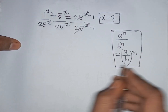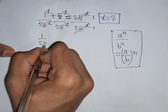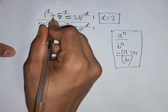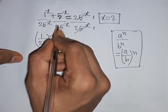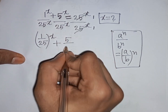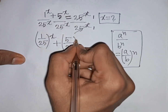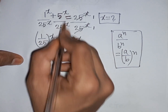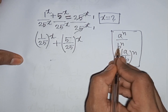According to this formula, we can write (1 over 25) power x plus (5 over 25) power x. That means it will be (5 over 25) power x, since x is the same power but different base — the same rule applies to both terms.